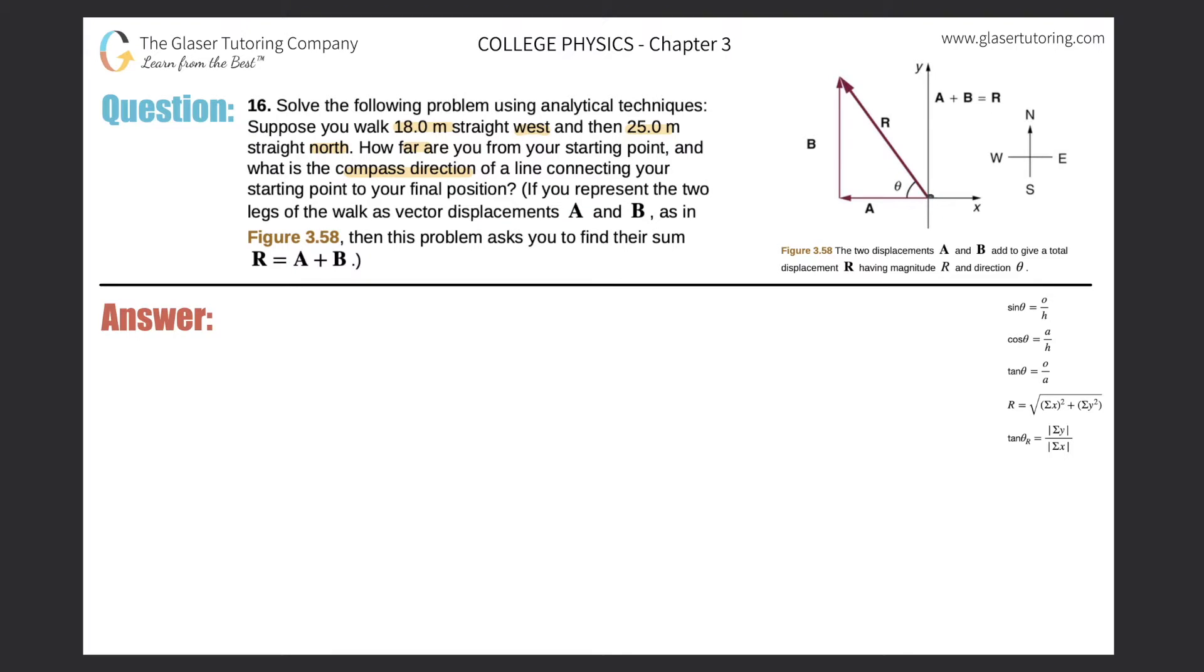Okay, so Figure 3.58 is represented on the side. We're starting at the origin of our coordinate system and it says we're going to walk 18 meters straight west. So that would be indicated by this vector right here, the 18 meter west vector. They noted here as A. I'm going to write A is equal to 18.0 meters.